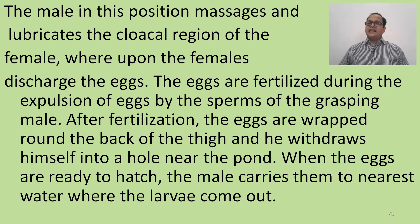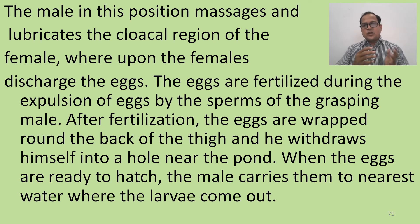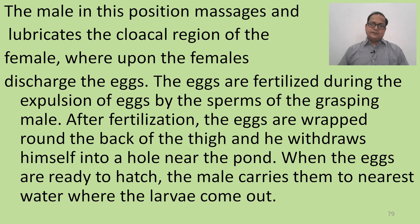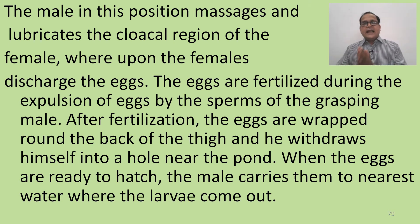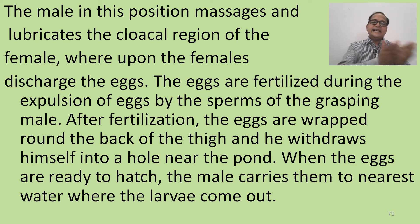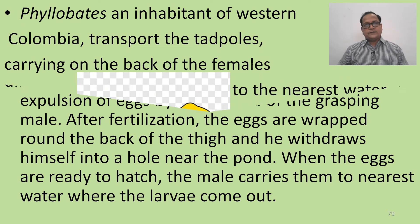After fertilization, the eggs are wrapped around the back of the male's thighs, and he withdraws himself into a hole near the pond. When the eggs are ready to hatch, the male carries them to the nearest water, where the larvae come out.